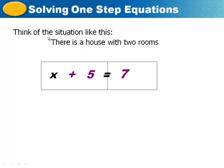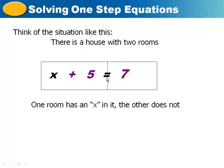Alright, so what we want to do is look at this equation as if it's a house with two rooms. In our first room we have x plus 5, and in our second room we have 7. The rooms are divided or separated by the equal sign.